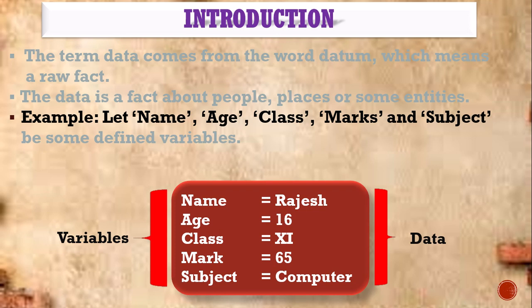When we process the data, for example 'Rajesh is 16 years old' — now this is processed data, meaningful information. When I say just 'name: Rajesh, age: 16', that is data. But when I combine and process it, I get meaningful information as output: 'Rajesh is 16 years old' or 'Rajesh is studying in 11th standard.' That output is called information.